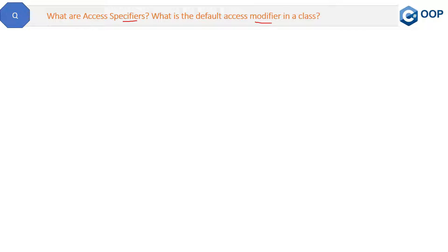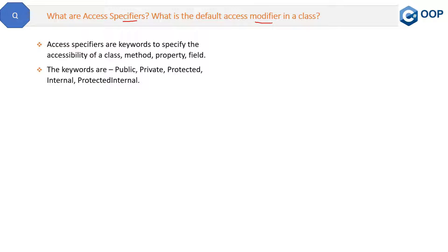Here is the simplest definition, which is easy to remember and easy to speak in front of the interviewer. Access specifiers are keywords to specify the accessibility of a class, method, property, and field. The keywords are public, private, protected, internal, and protected internal. Out of these, the first three are very important. Internal and protected internal are related to assemblies.